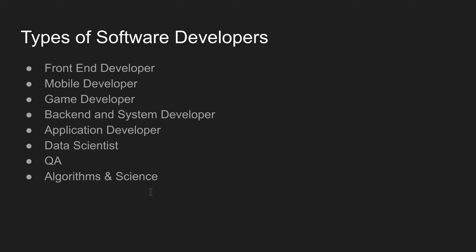And then algorithms and science. For example, a software application requires 1GB of RAM. The algorithms and science team works with software developers to optimize that requirement — using advanced algorithms, they can bring it down from 1GB to perhaps 100MB.